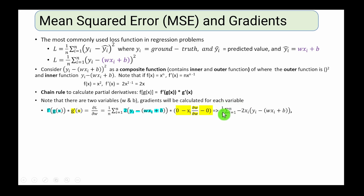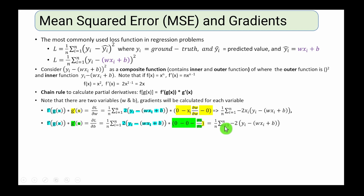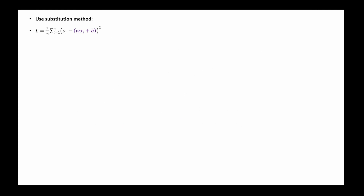This is how you calculate gradients with respect to the slope w. For the y-intercept b, the outer function is the same. Taking the partial derivative of the inner function with respect to b: the yi term is zero, the wxi term is zero, leaving minus 1. So the gradient with respect to b is minus 2 times the inner function (yi minus wxi minus b).